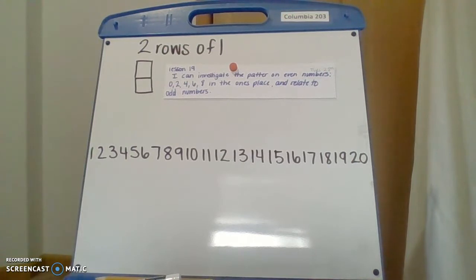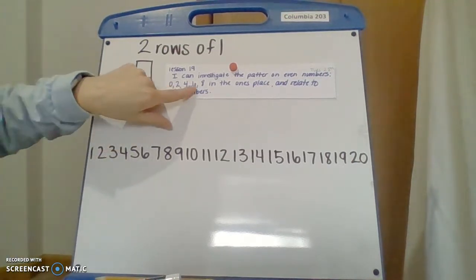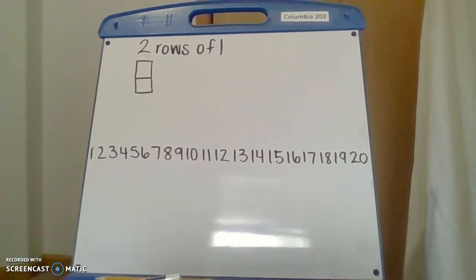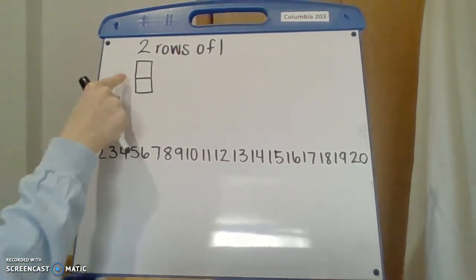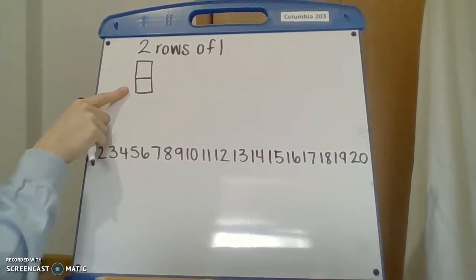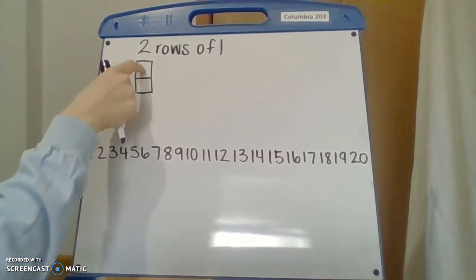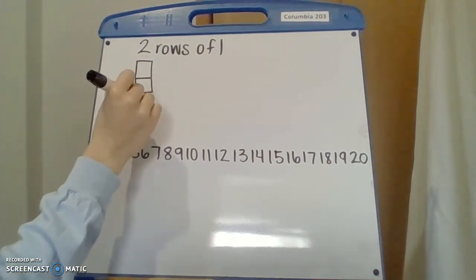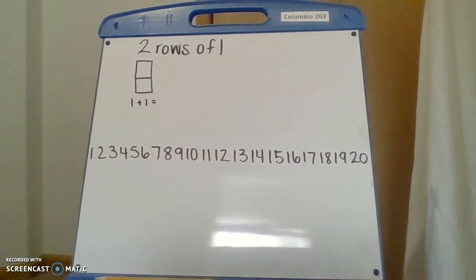So your learning target is I can investigate the pattern on even numbers 0, 2, 4, 6, 8 in the ones place and relate to odd numbers. So I drew two rows of one, and when you are drawing two rows of one, make sure your boxes are pretty even. You're trying your best making neat rows or columns, whatever you're doing. So you're going to ask yourself, is two even or is it odd?